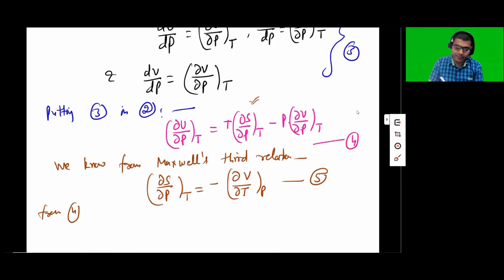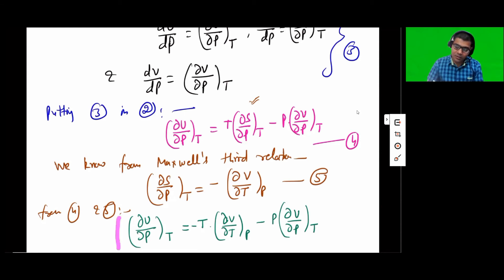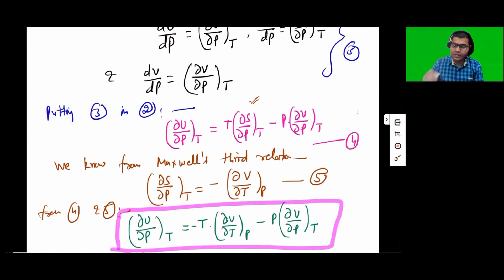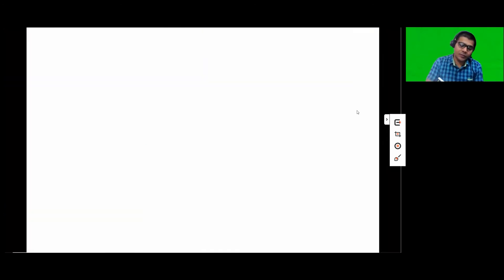From equations 4 and 5, we get del U over del P at constant T is equal to T times negative of del V over del T at constant P, minus P times del V over del P at constant T. This is known as the second internal energy equation, which can be utilized further to write down a different form of the change in internal energy.